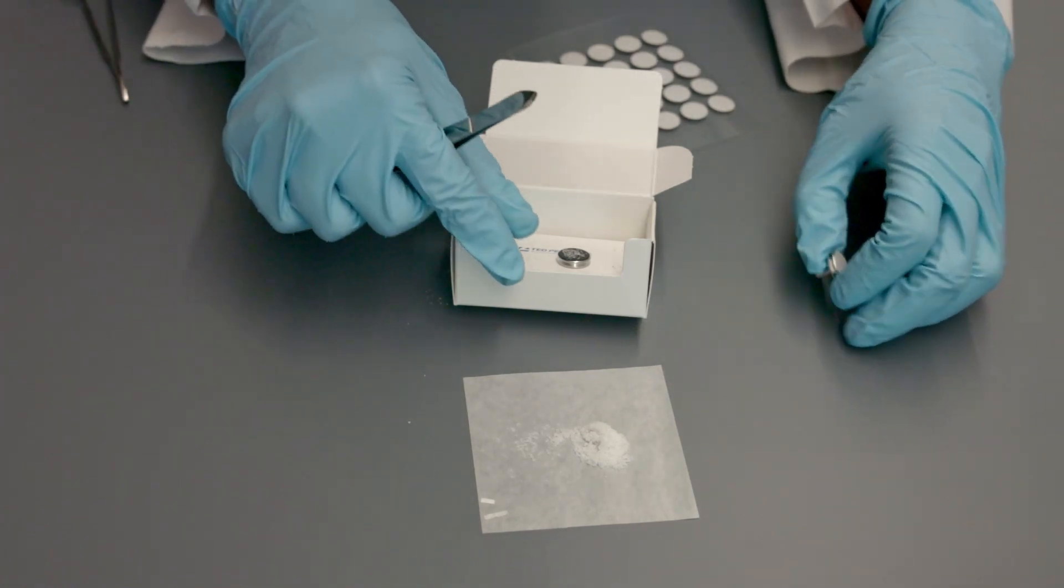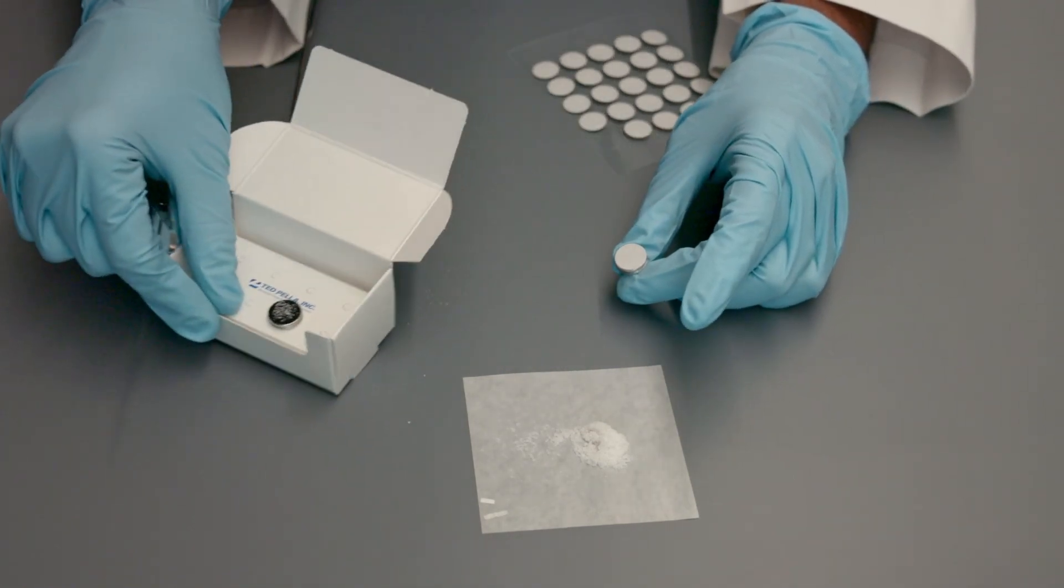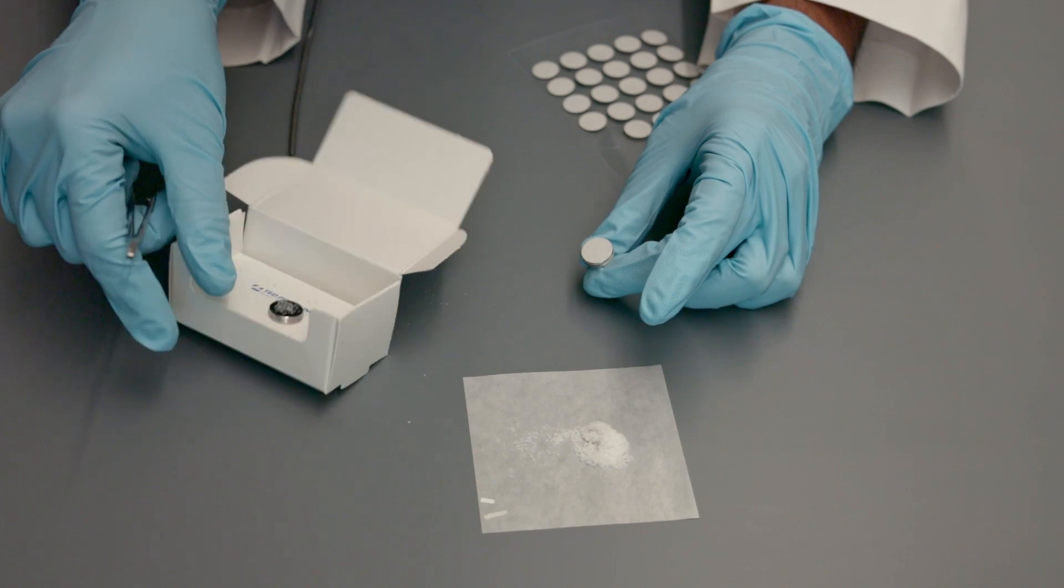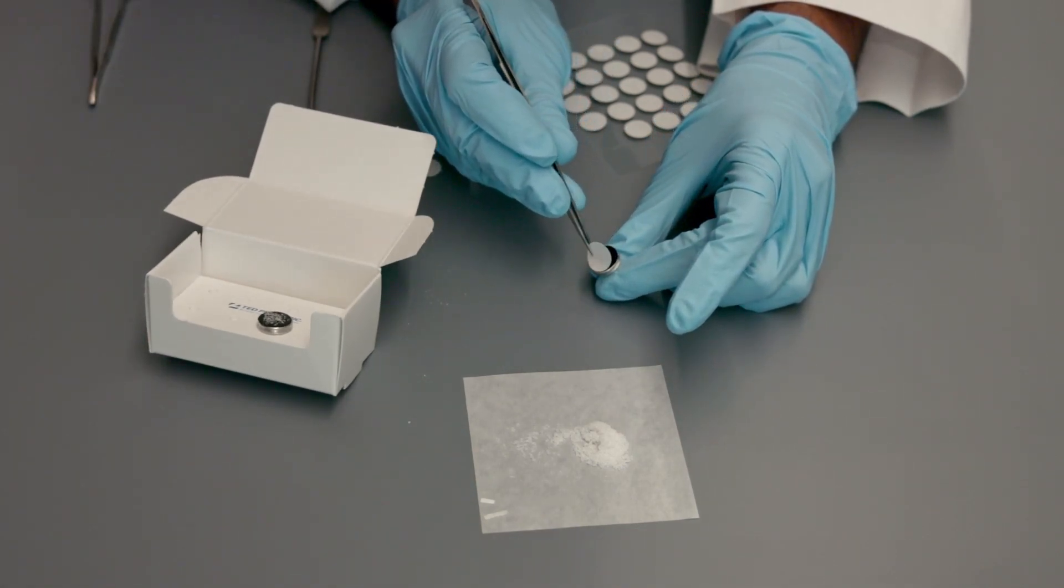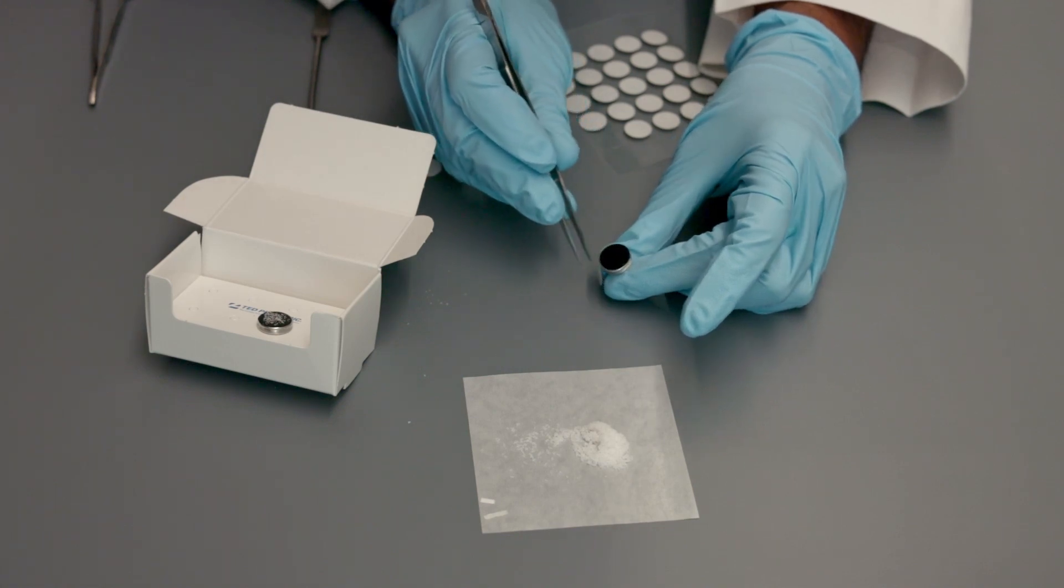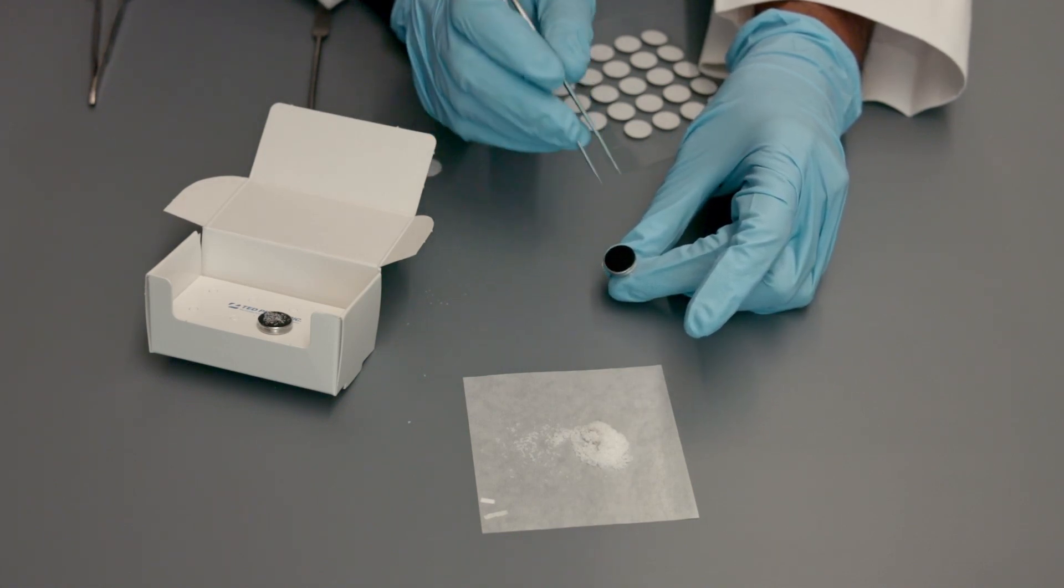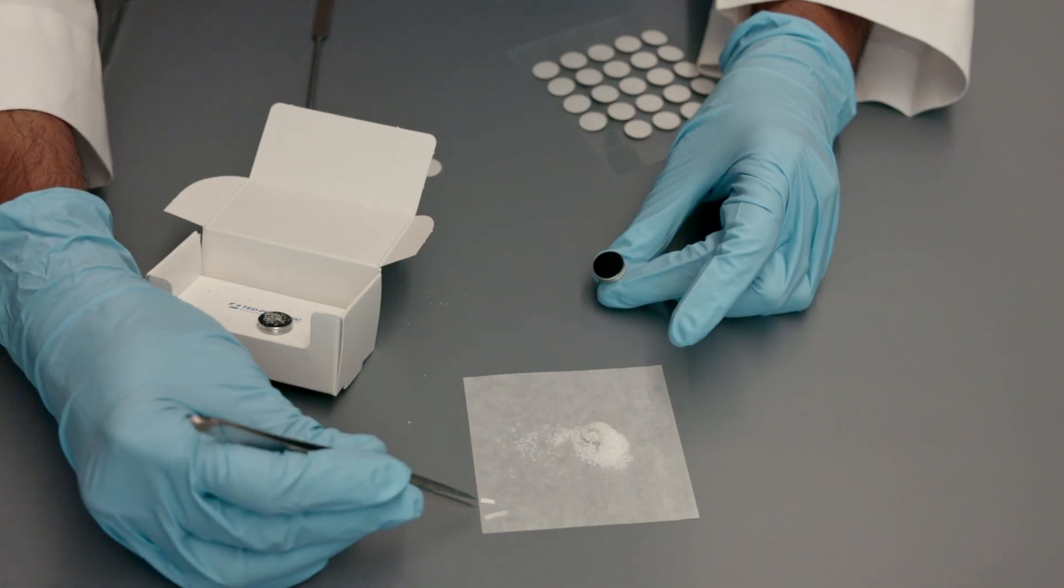Let's prepare another sample using the same process. Remove the top liner on the conductive carbon tape and place the samples on the mount.